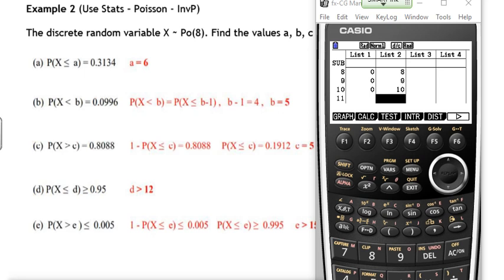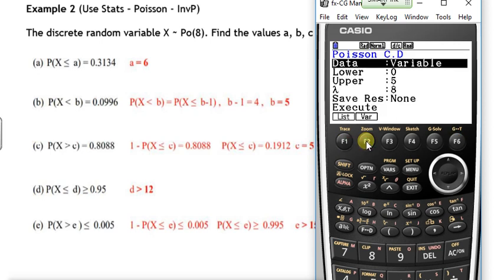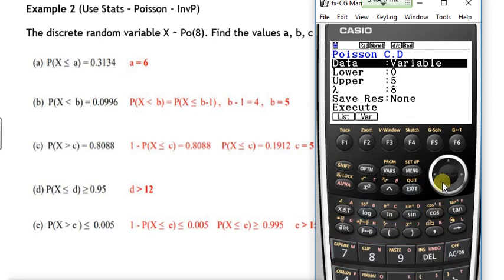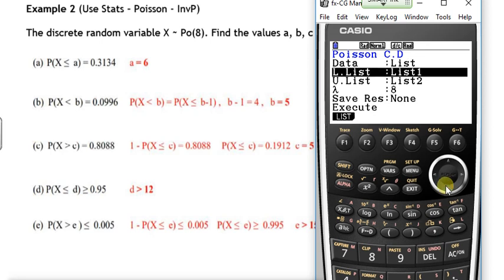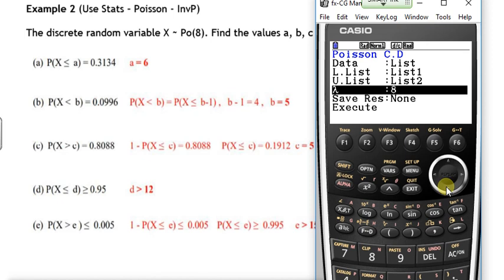Now with those lists set up, if you go to the distribution Poisson and PCD, but instead of getting it to read variables, if you get it to read lists, you get the lower list to be list 1, the upper list to be list 2, and the lambda value to be 8.